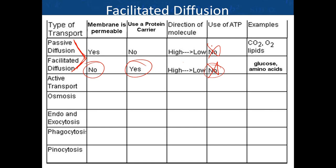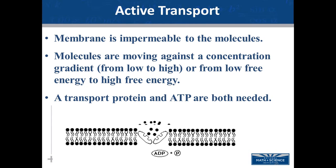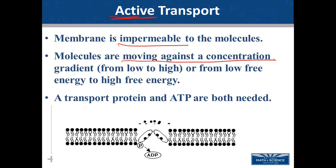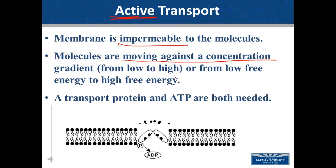What if you wanted to move molecules against a concentration gradient — like trying to put perfume molecules back into a bottle? That's going to require energy in the form of ATP. That is called active transport. The membrane is impermeable to the molecules. The molecules move against the concentration gradient, from low concentration to high concentration, or from low free energy to high free energy. In order to make this work, it requires a transport protein and ATP.